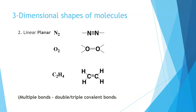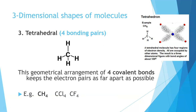We also see linear arrangements in molecules like N2O2 and even in organic molecules like C2H4, where the double bond is linear. You'll notice there is a different bonding angle between the carbon and hydrogen bonds in that molecule.